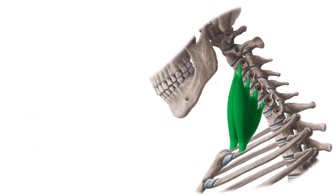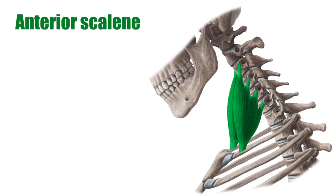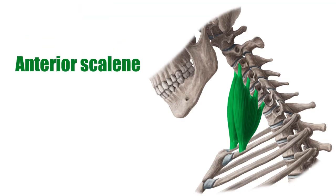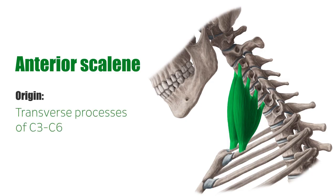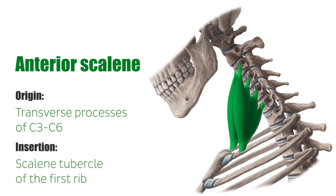The scalene muscles are comprised of three pairs of muscles, namely anterior scalene, middle scalene, and the posterior scalene. The anterior scalene muscle runs from the anterior tubercles of the transverse processes of C3 to C6, i.e. the third to sixth cervical vertebrae, and has its insertion on the scalene tubercle of the first rib.